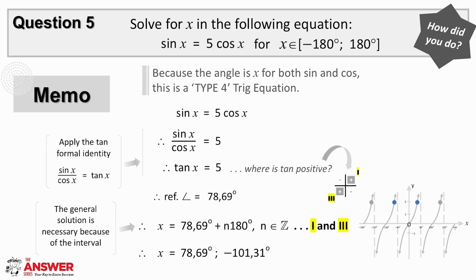So it is the tan identity that we need to apply, and so to apply it we need to divide through by cos x. This then becomes tan x equals 5, which is just a type 1 example. The next two steps are to find the reference angle, and to find in which quads tan is positive.